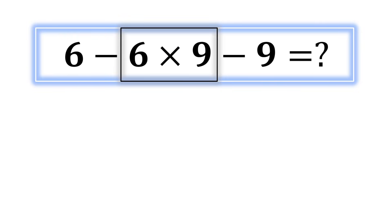According to PEMDAS, multiplication has higher priority than subtraction, so we perform the multiplication first. 6 multiplied by 9 equals 54.